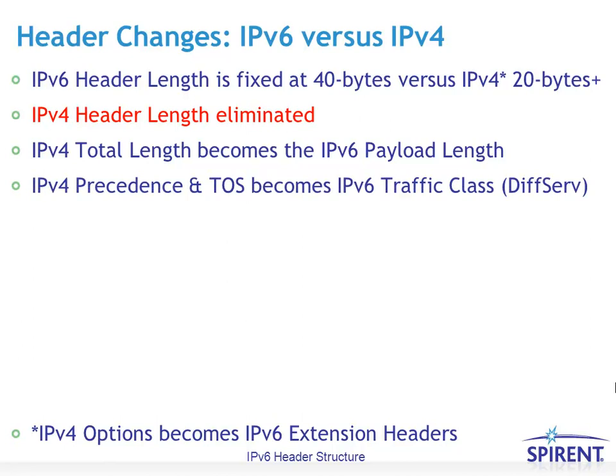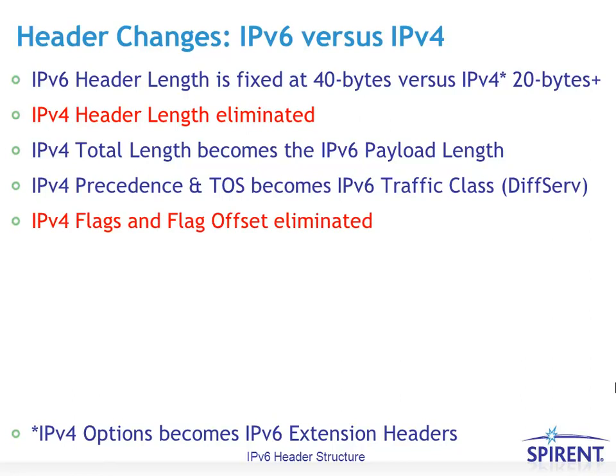The IPv4 precedence and TOS bits become the IPv6 traffic class field. Both of them today use differentiated services for their definition. IPv4 flags and flag offset have been eliminated. The IPv4 flags were mostly used for fragmentation, which has changed significantly in the IPv6 world — we'll talk more about that later.